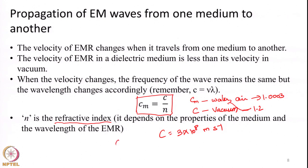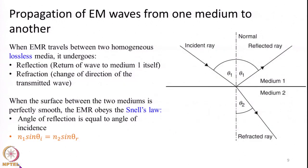We also know the relationship c = νλ (c equals nu lambda). When velocity changes, this relationship will change accordingly. The wavelength of the EMR in the medium will change, but the frequency will be preserved. That is, when EMR travels from one medium to another, the wavelength will change according to the change in velocity, while the frequency will remain constant.